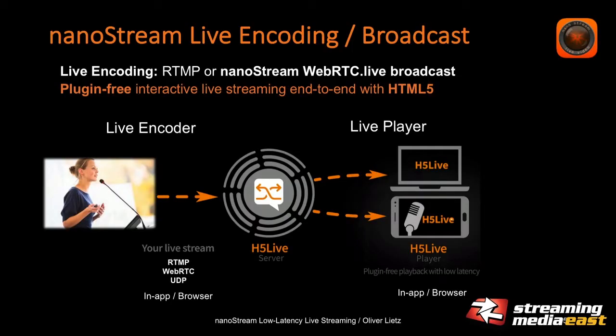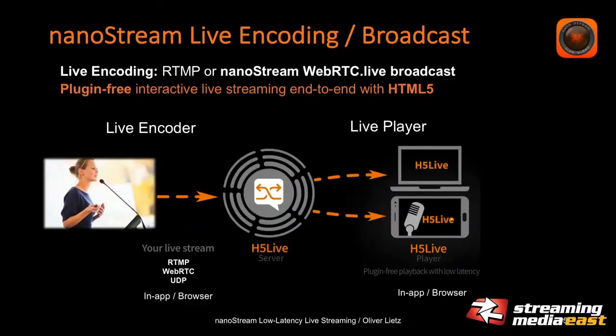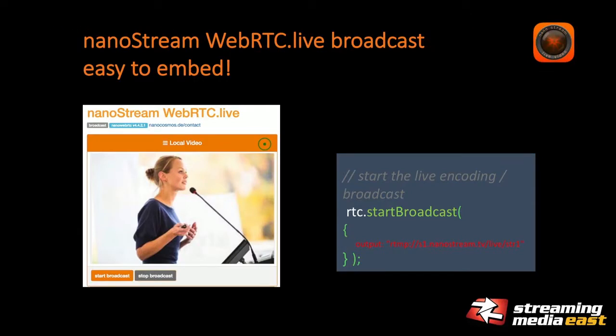I've talked about the live playback part, and of course you need a live encoder as well. You can still use existing RTMP encoders — for example, our NanoStream SDKs, which are available on all platforms. However, if you'd like a browser-based solution for plug-in-free live encoding, you can use our WebRTC Live product, which is also easy to use and unique because it connects the peer-to-peer approach of WebRTC to live streaming environments. With the combination — WebRTC on the encoder side and the H5 Live player on the player side — and just a few lines of JavaScript, you have a browser-based solution for creating interactive live video applications.